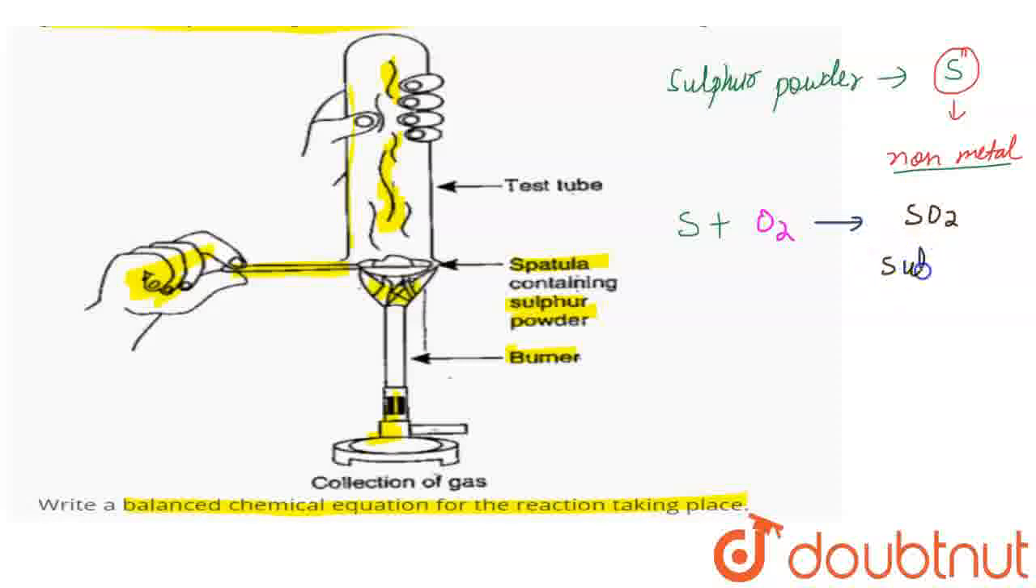An oxide is what happens when you combine an element with oxygen. If the element is a non-metal, then it will be a non-metal oxide. That is SO2, which is sulfur dioxide. So sulfur dioxide is a non-metal oxide. Sulfur on burning in the presence of oxygen will produce SO2 gas, which is a non-metal oxide.